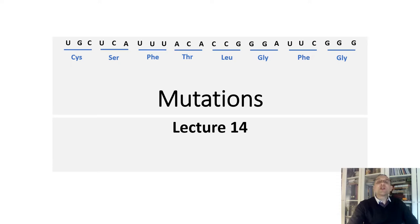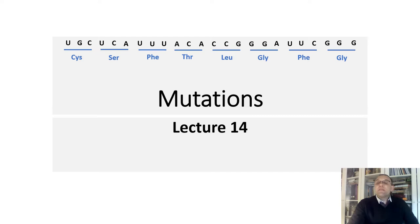In our previous lecture we learned genes control how cells work by making proteins. The proteins have specific functions and act as messengers for the cell. Each gene must have the correct instructions for making its proteins, allowing the protein to perform the correct function for the cell. But what if things go wrong? What if there is a mistake in making a protein? This is what we're going to discuss during today's lecture, and the name of the lecture is Mutations.